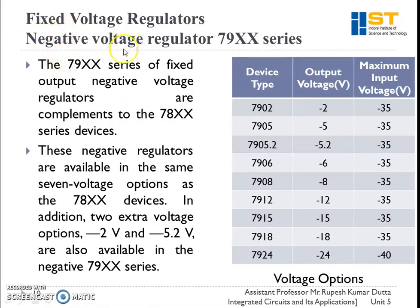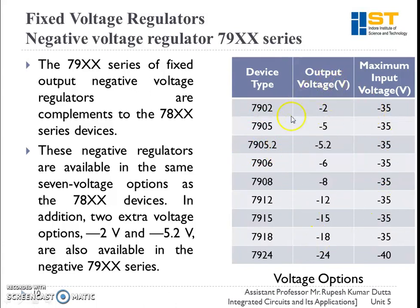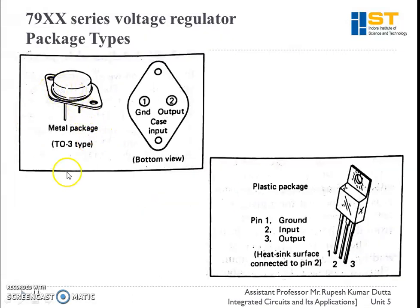Next is the negative voltage regulator, which is the complement of the 78XX series — that is the 79XX series. The 79XX series also has all those seven voltage options but additionally includes 7902 and 7905.2. These regulator ICs provide negative output voltages, and the maximum input voltage that can be applied is in negative polarity.